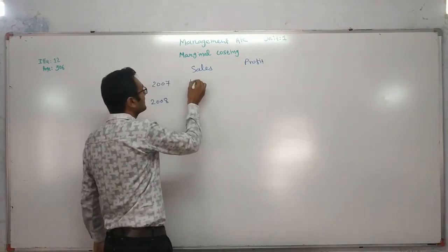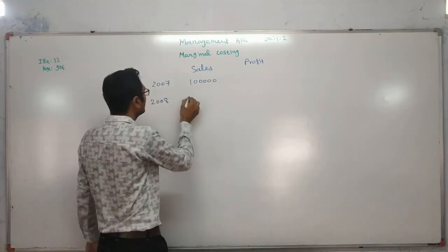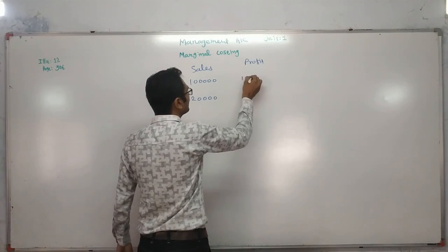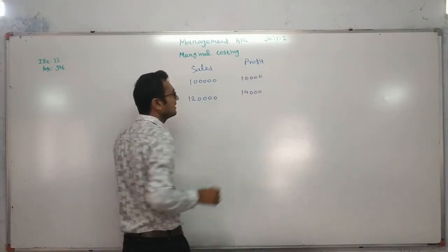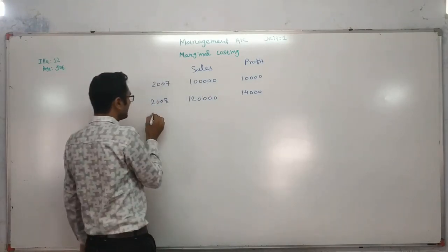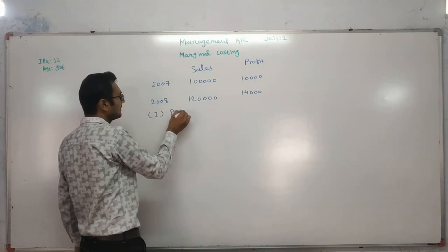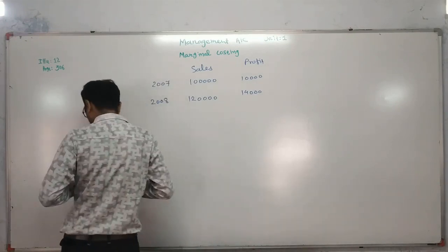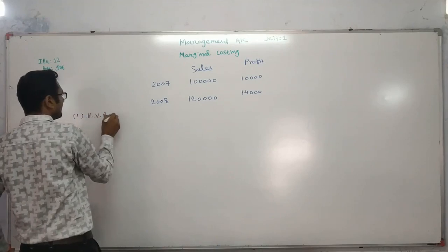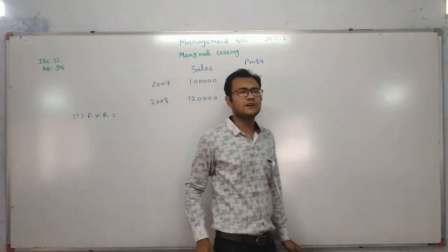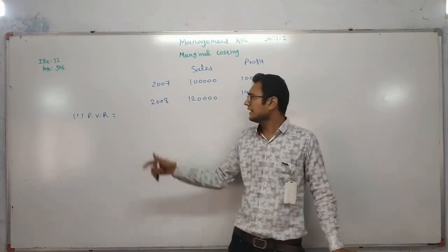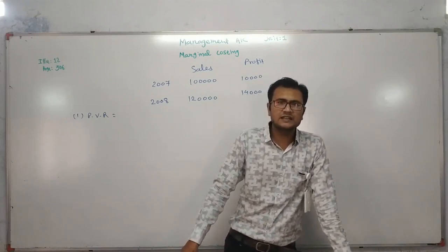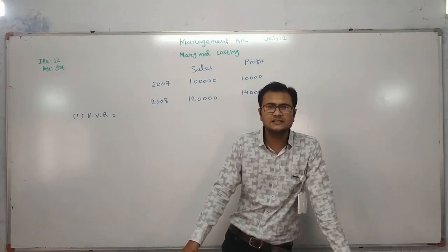The sales for 2007 and 2008 are given. The profit is given as 10,000 and 14,000 rupees. The first question is PVR — profit volume ratio. There are two formulas to find out PVR which are widely applied: contribution upon sales into 100, and the second formula — changes in profit upon changes in sales into 100.